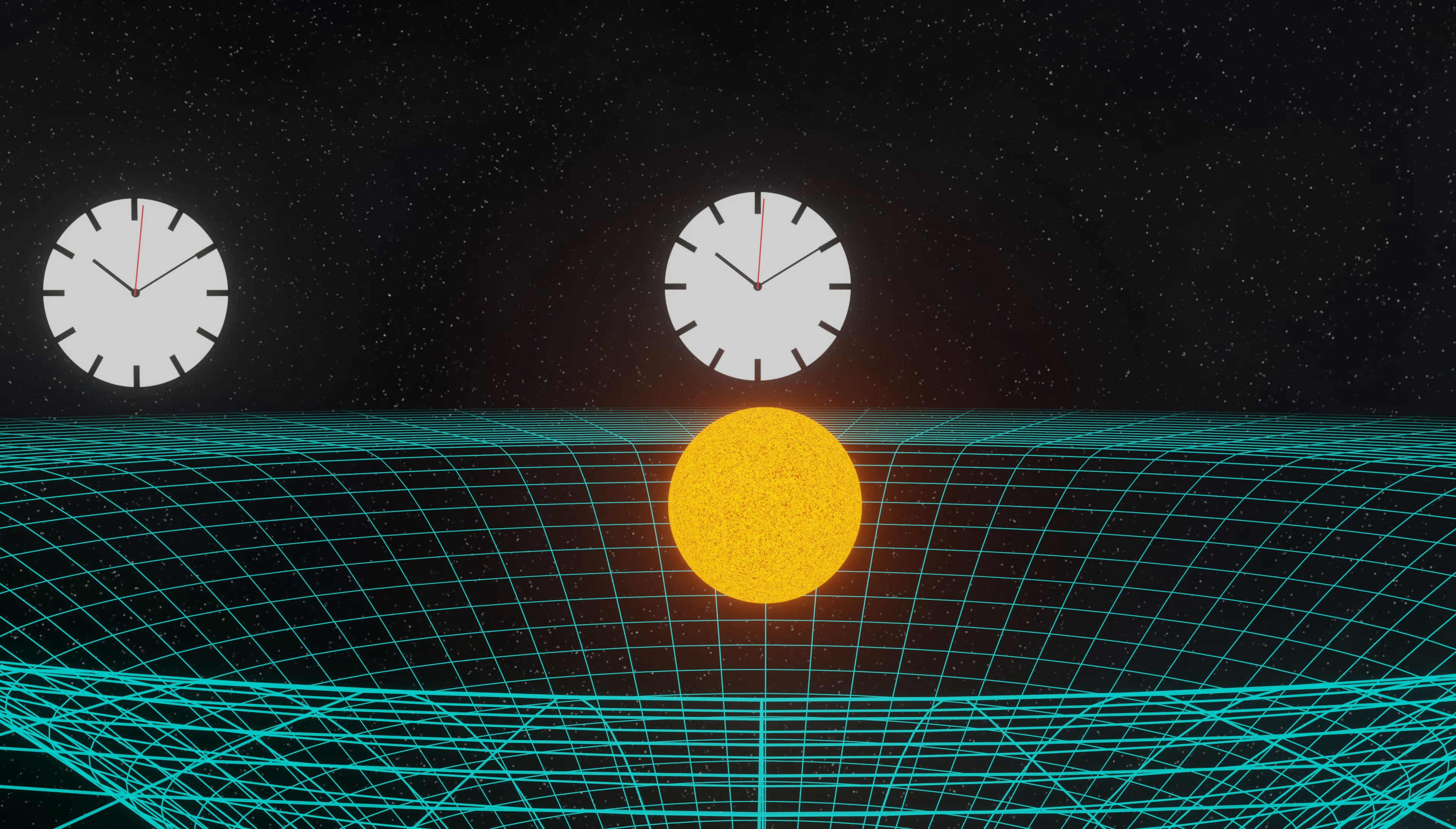The theory of general relativity also says that gravity affects time, and that time flows at different speeds the closer you get to a massive body. The closer you are, the slower the passage of time.